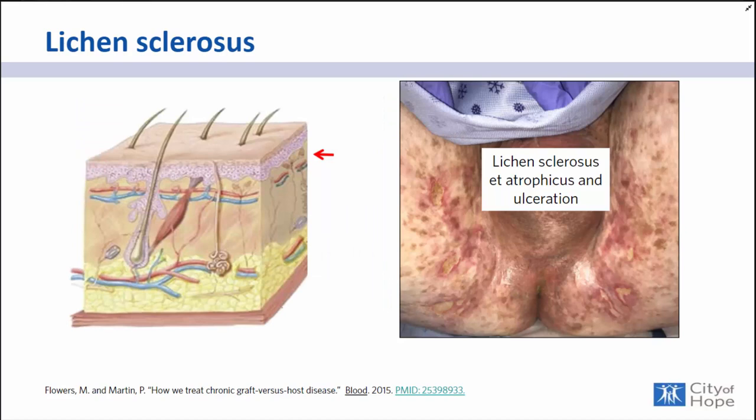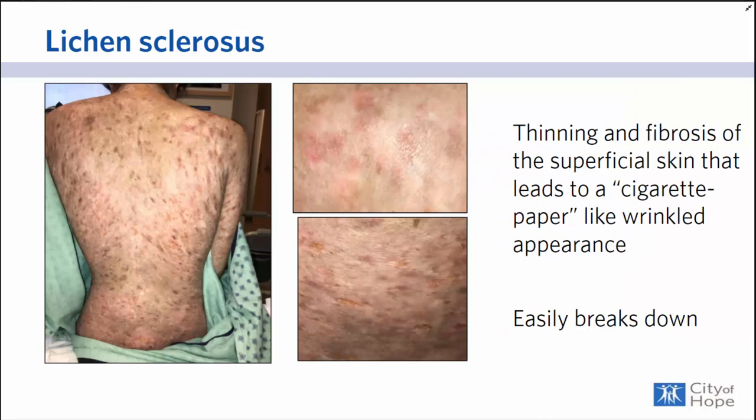Moving more superficially in the skin, another morphologic subtype of chronic GVHD is called lichen sclerosis. This occurs when there's chronic inflammation in the superficial area of the skin that ultimately leads to thinning of the skin, referred to as atrophy. This atrophic skin is very prone to tearing and ulcerating. Here's another example of thinning and fibrosis of the superficial skin. When I zoom in on what the skin looks like, it often has a cigarette paper-like wrinkled appearance very typical of atrophic skin.